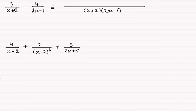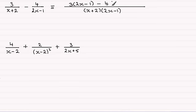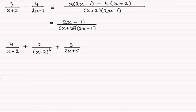We would say: what do we multiply (x + 2) by to get this denominator? Well it's got to be (2x - 1), and we'd multiply the top — the 3 — with (2x - 1), so I'd have 3 times (2x - 1). Then we'd go through the same process: what do you multiply (2x - 1) by to give this denominator? It'll be (x + 2), so you multiply the top with (x + 2). When you simplify this, you end up with (2x - 11) all divided by (x + 2)(2x - 1).